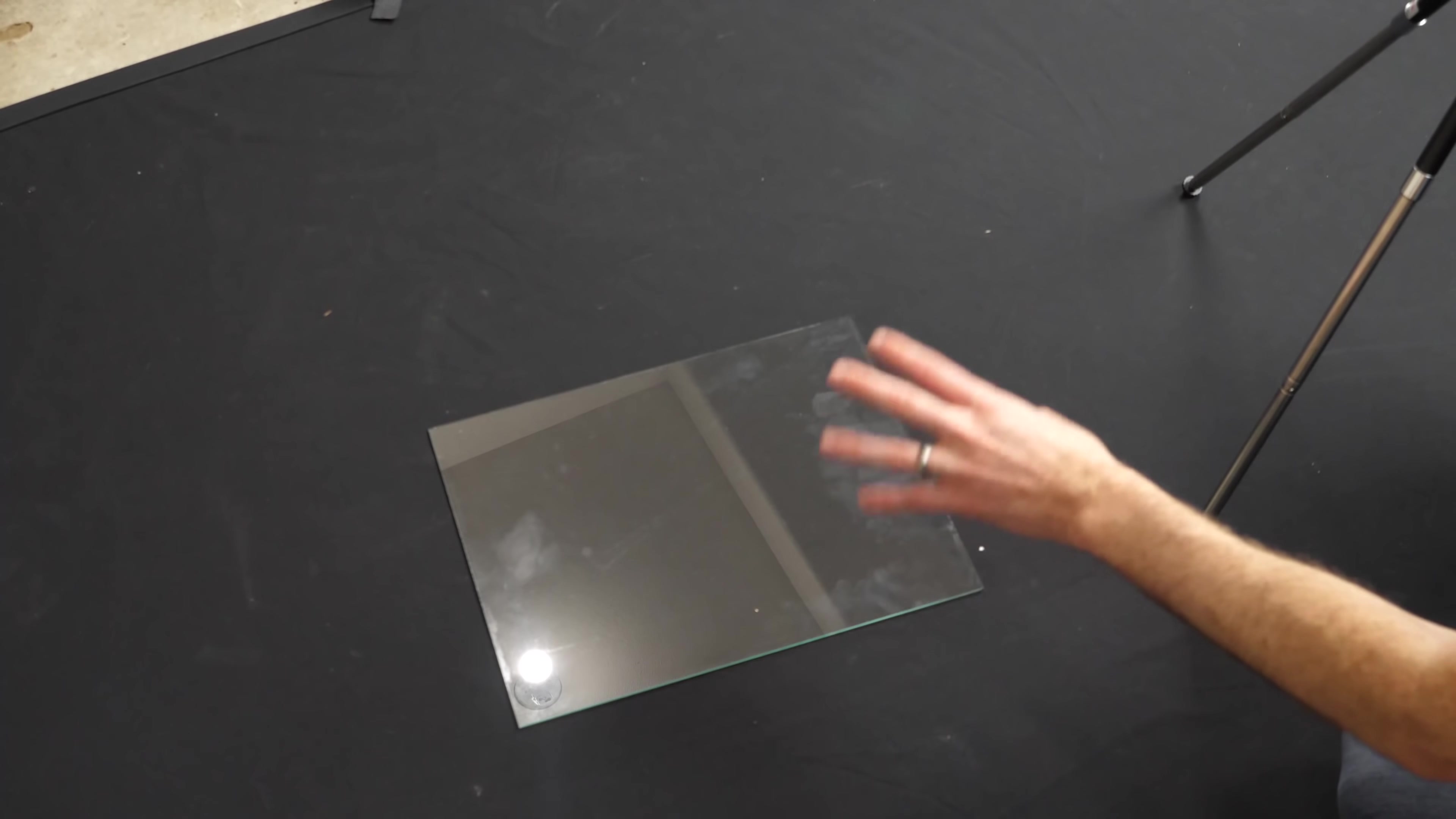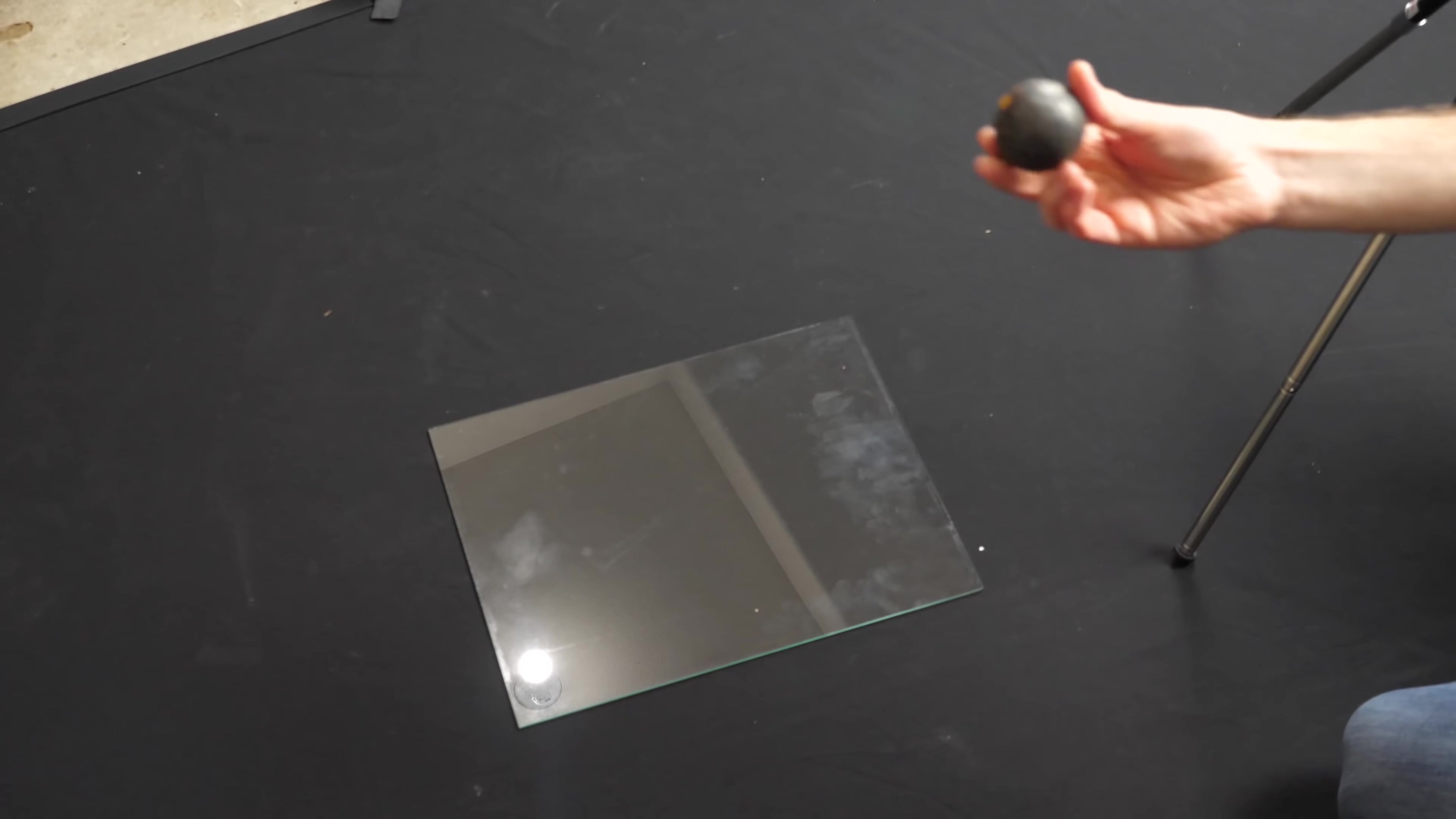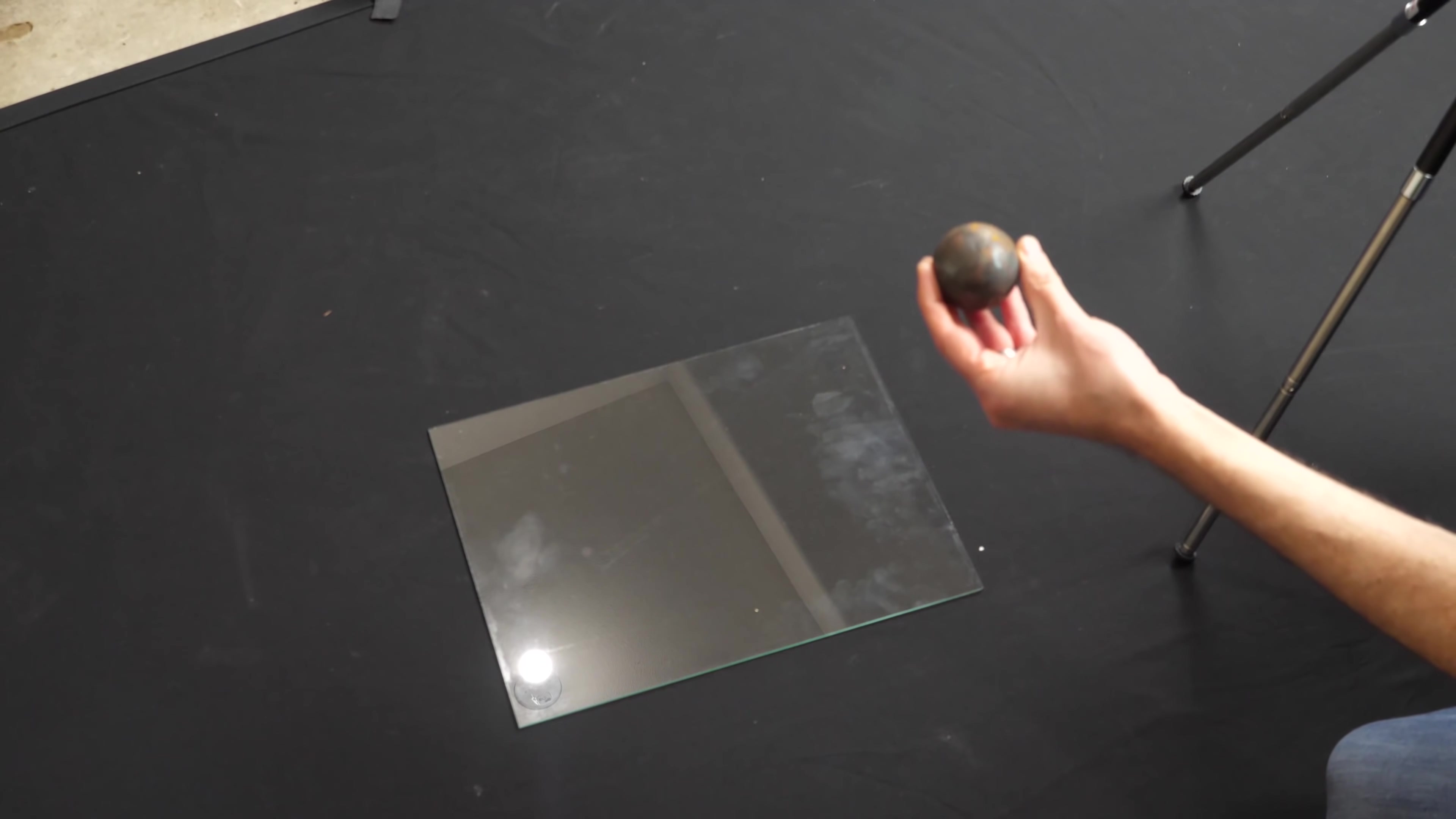Okay, first we're going to be seeing what it looks like to break glass at just a thousand frames per second with a low projectile velocity. So let's see if we can pick up anything at just a thousand frames per second with dropping a ball on this piece of glass here.